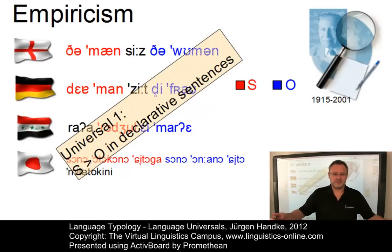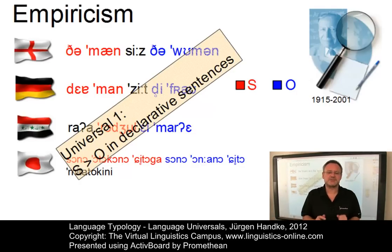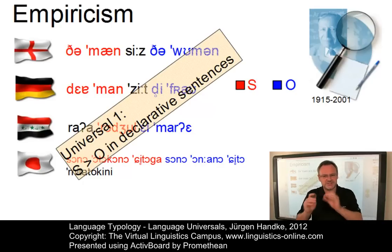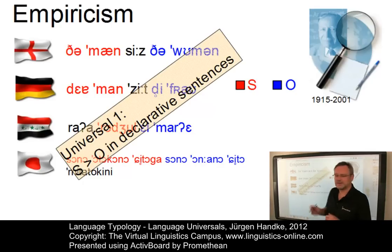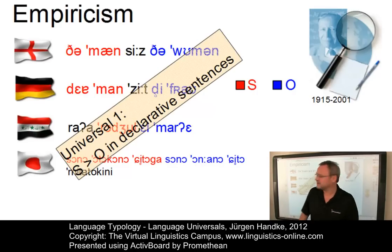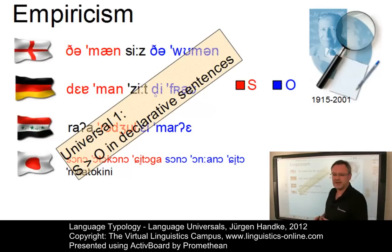Here it is: in declarative sentences with nominal subject and object, the dominant order is always one in which the subject — marked in red — precedes the object — marked in blue.